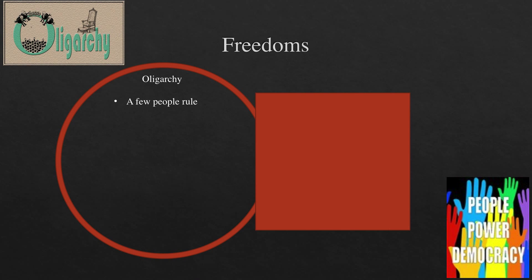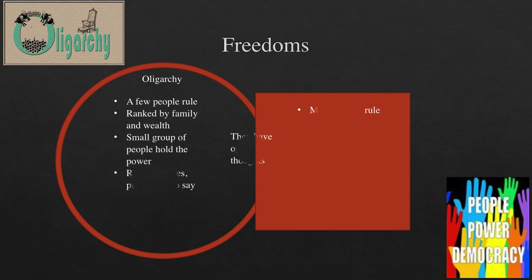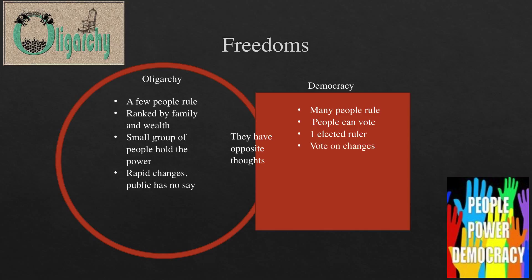The Venn diagram illustrates the similarities and differences between oligarchy and democracy. Oligarchy: a few people rule, it is ranked by family and wealth, there is a small group of people that hold the power, there is rapid changes, and the public has no say.